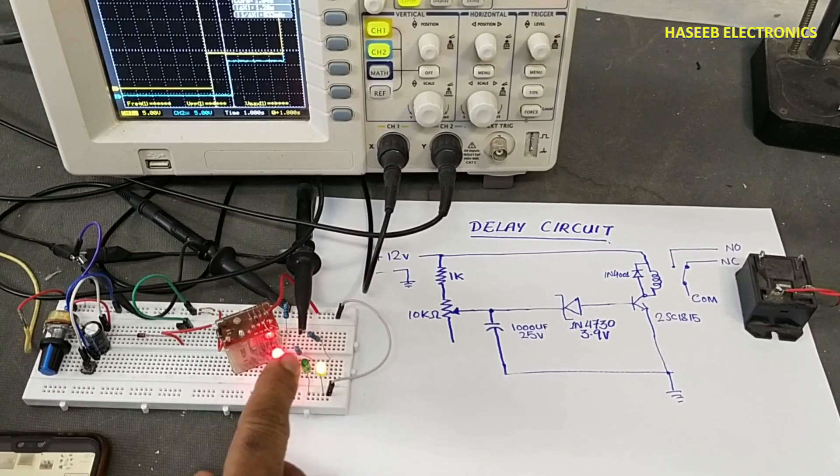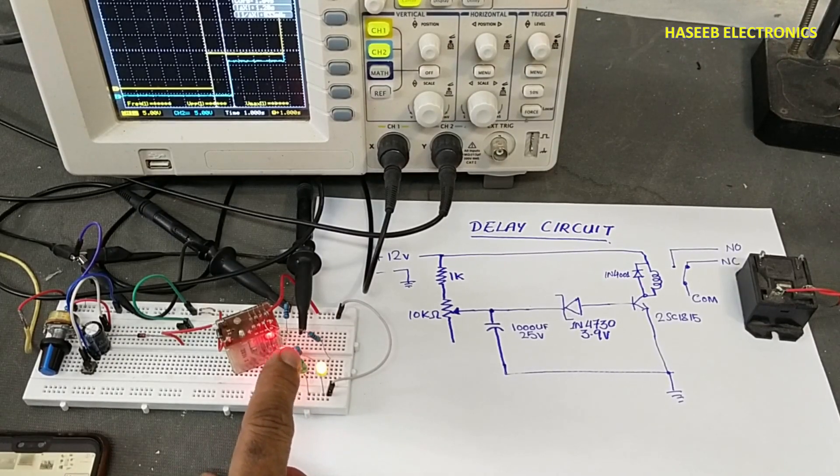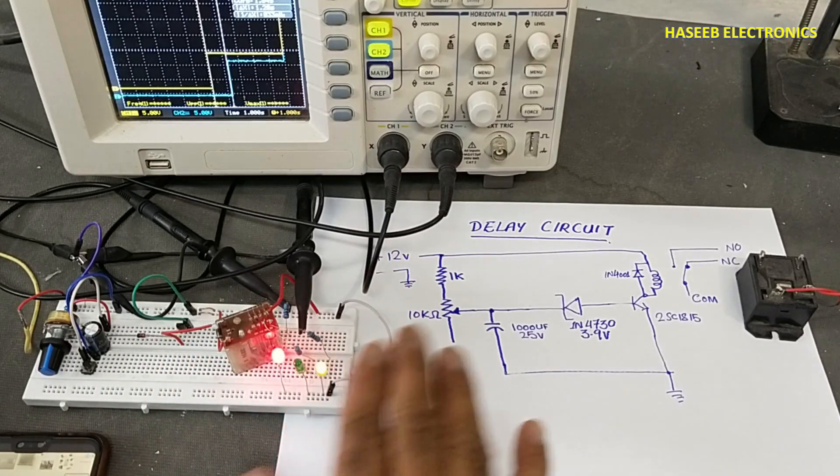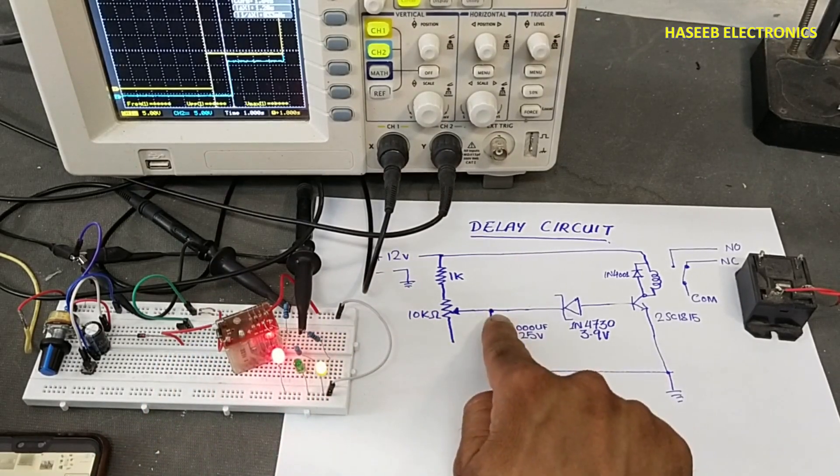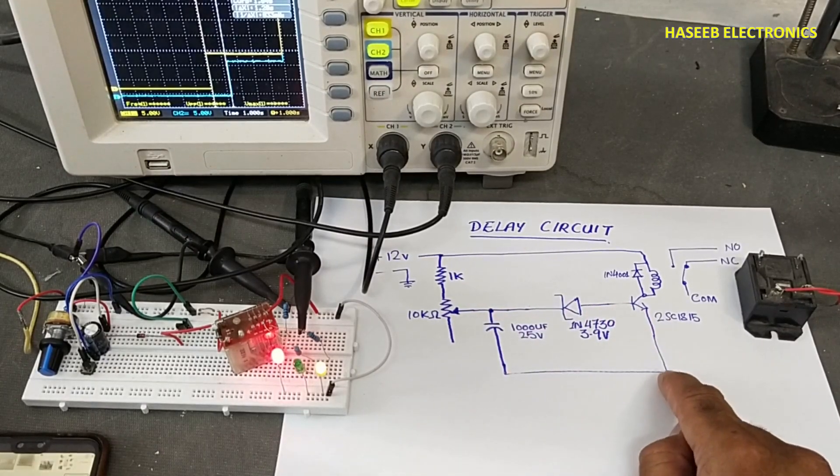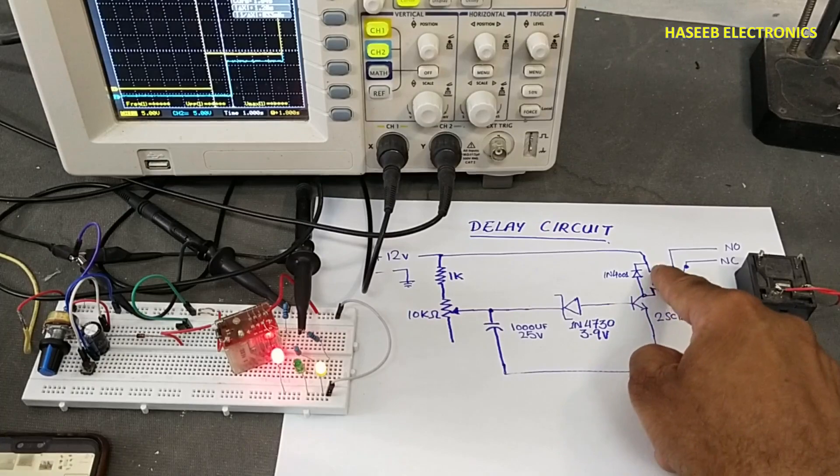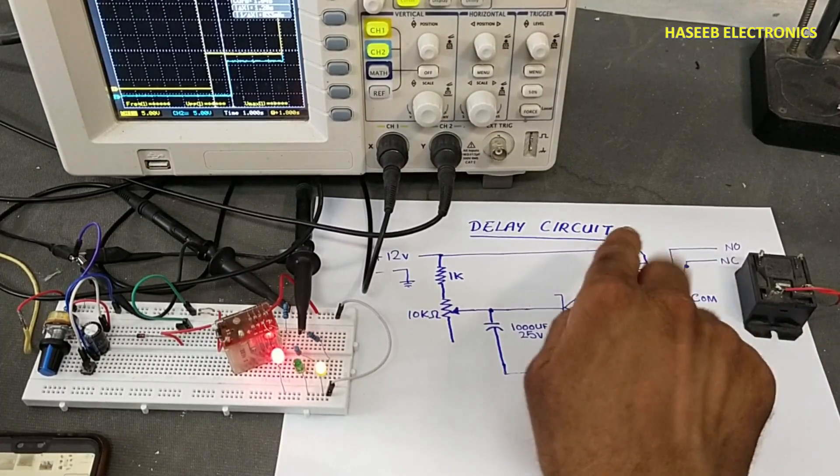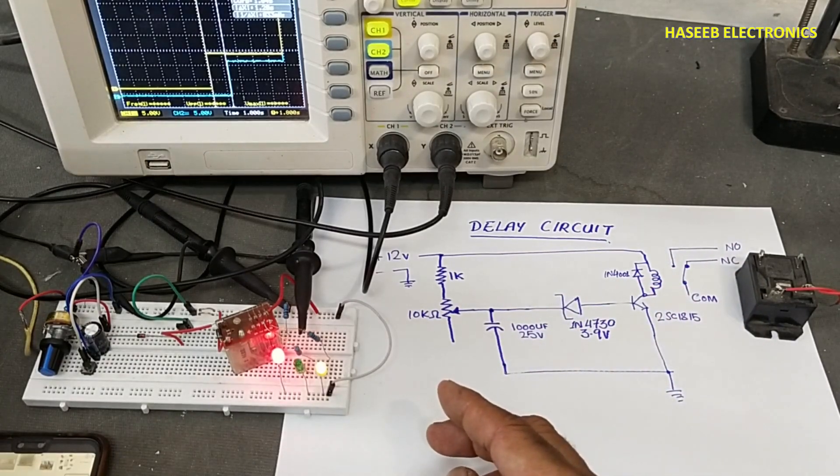If you are connecting load here, the load will receive power for that time when this relay remains off, in this charging time period. When this capacitor charges, voltage will build up at the base and this transistor will start to switch. It will drive this relay. When relay turns on, it will shift the contacts.